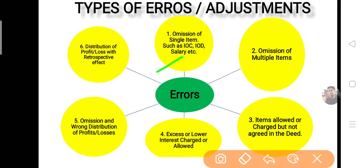दूसरा type: omission of multiple items — interest on capital, salary, interest on drawings — एक से ज़्यादा चीज़ें partners भूल गए। तीसरा type: items allowed or charged but not agreed in the deed — कोई ऐसी चीज़ जो partners को दे दी गई या उनसे ले ली गई जो deed में agreed नहीं थी — that is again an error। चौथा type: excess और lower interest charged और allowed — ज़्यादा या कम charge/allow करना।